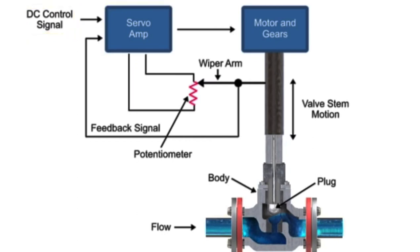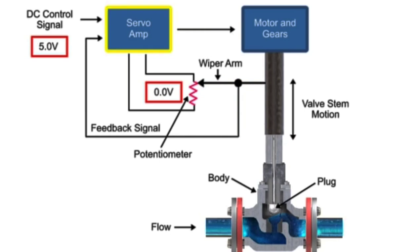Feedback is achieved with a wiper arm attached to the valve stem that sends a signal back to the servo amplifier where the position is monitored. The servo amplifier drives the motor until the control signal is equal to the feedback signal.